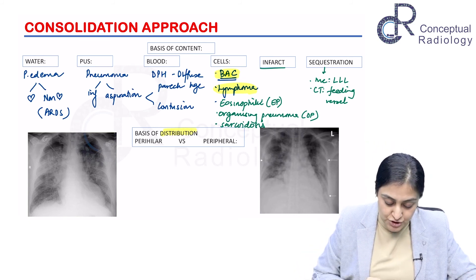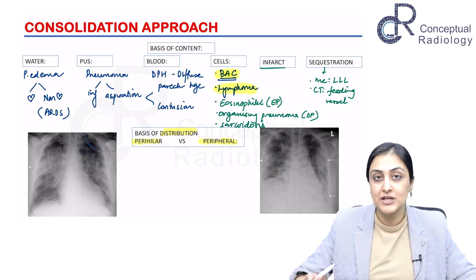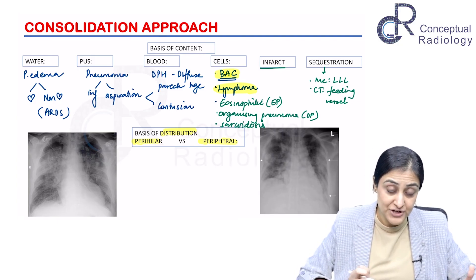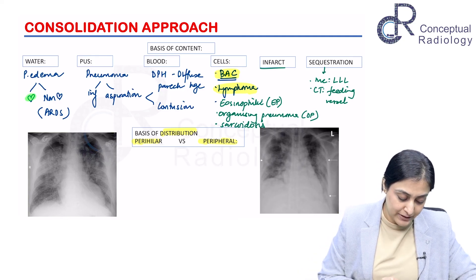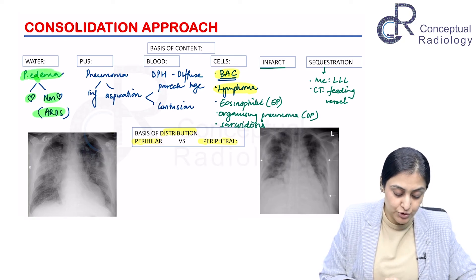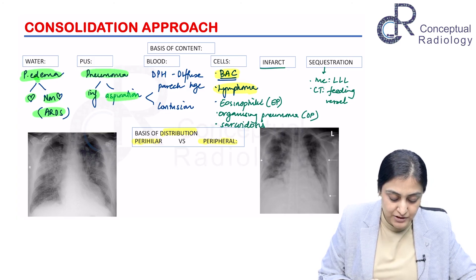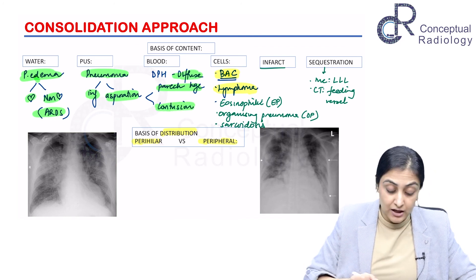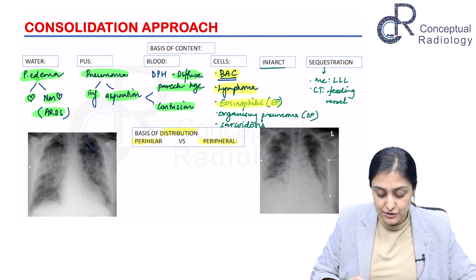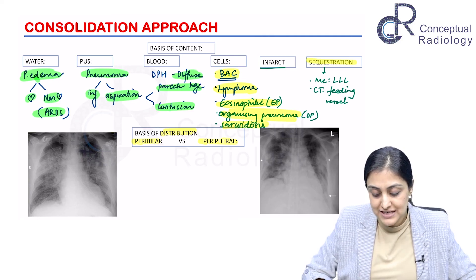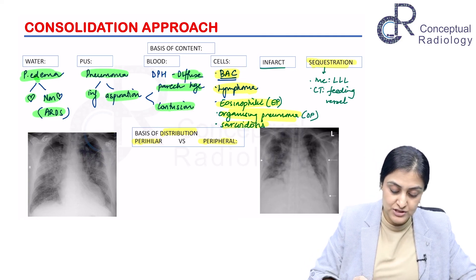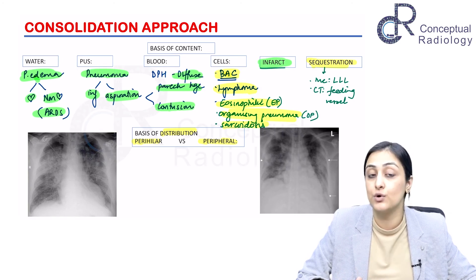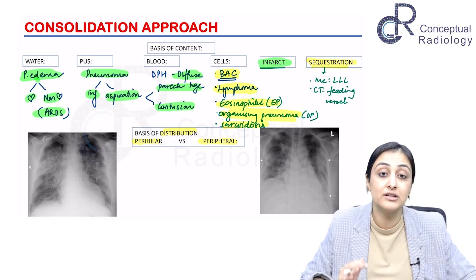On the basis of distribution and history — whether acute or chronic — we can further narrow down our differentials. Acute presentations include pulmonary edema (cardiogenic and non-cardiogenic), infective and aspiration pneumonia, DPH, and contusion; infarct is also acute. Chronic etiologies include mass lesions, eosinophilic pneumonia, organizing pneumonia, sarcoidosis, and sequestration. The ones in green are acute, the ones in yellow are chronic.